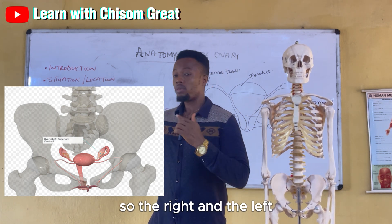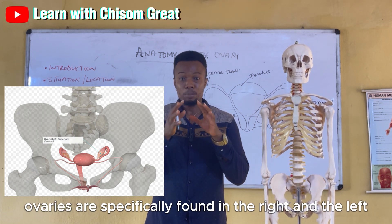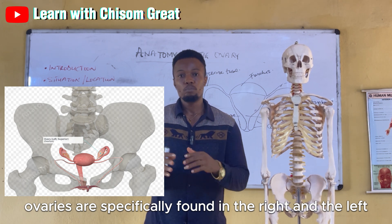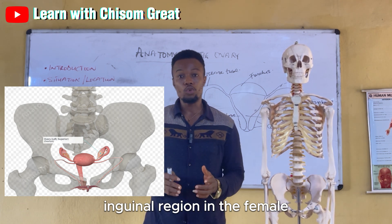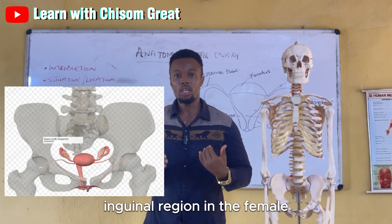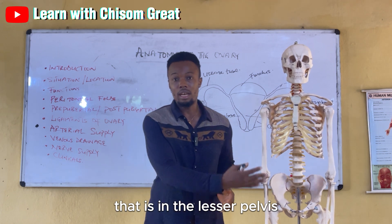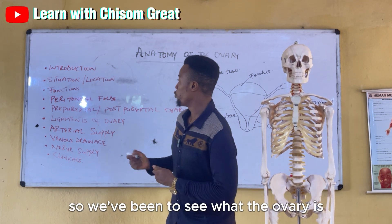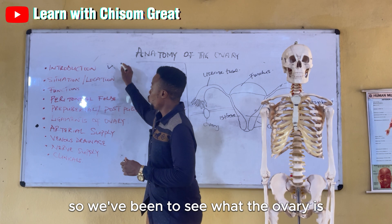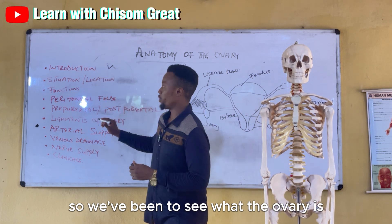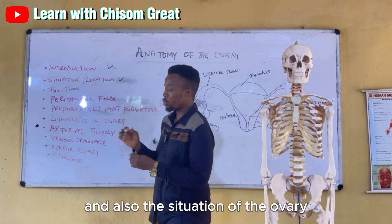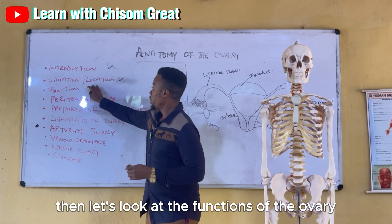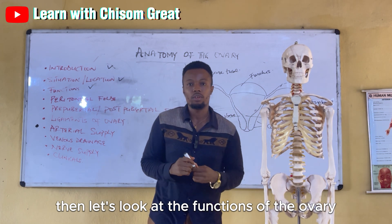The right and the left ovary are specifically found in the right and left inguinal region in the female, that is in the lesser pelvis. Now let's look at the functions of the ovary.